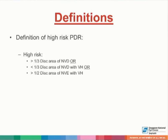The definition of high-risk proliferative diabetic retinopathy includes patients with more than one-third disc area of neovascularization at the disc, defined as vessels at or within one disc diameter of the disc. All patients with less than one-third disc area of neovascularization of the disc with vitreous hemorrhage, and all patients with at least more than half disc area of neovascularization elsewhere with vitreous hemorrhage.